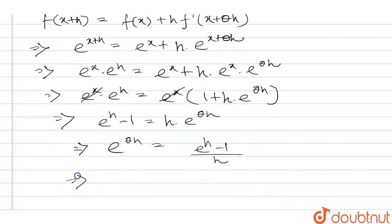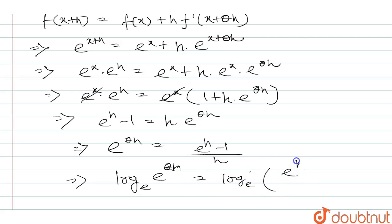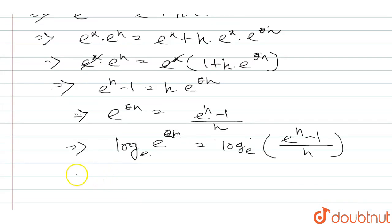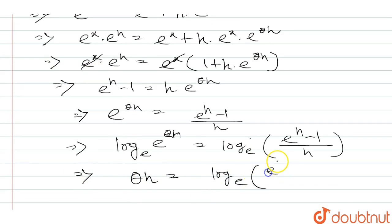x to the power x, log e to the power of theta h, and log of e to the power of h minus 1 divided by h. So theta h equals h times e to the power of h minus 1 divided by h.